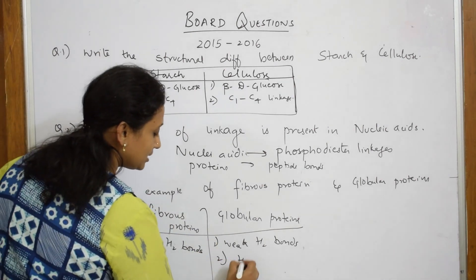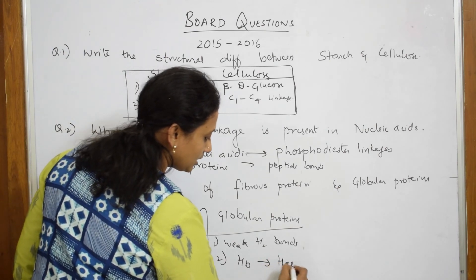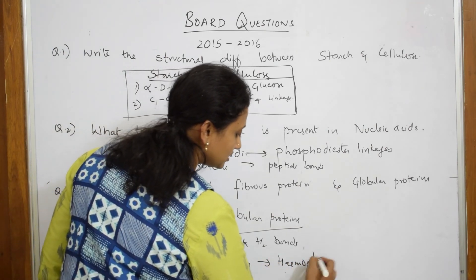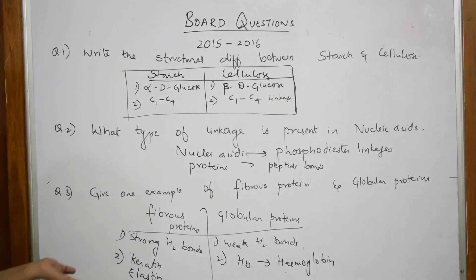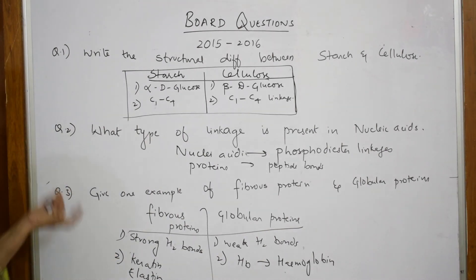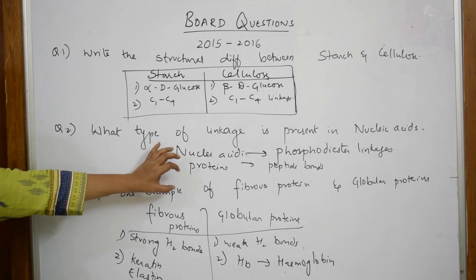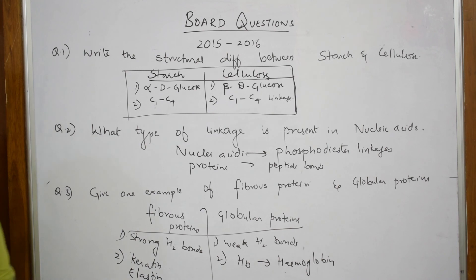For globular proteins, hemoglobin is the best example — that is what will appear in the answer key. This is how you write your three-mark answer. Every detail is included, and you'll be getting full three marks on this.